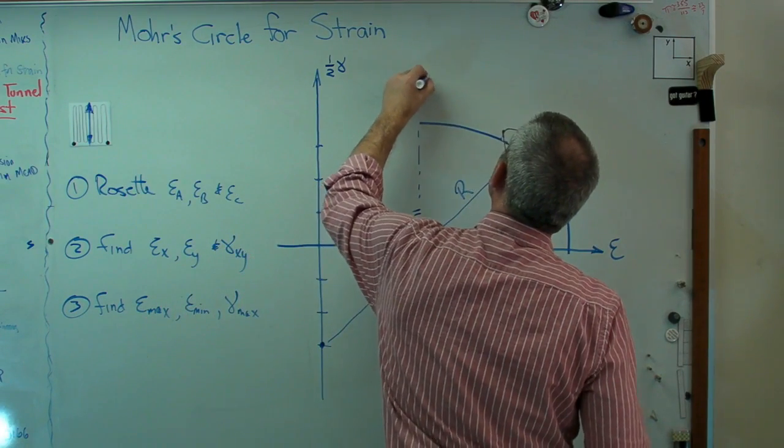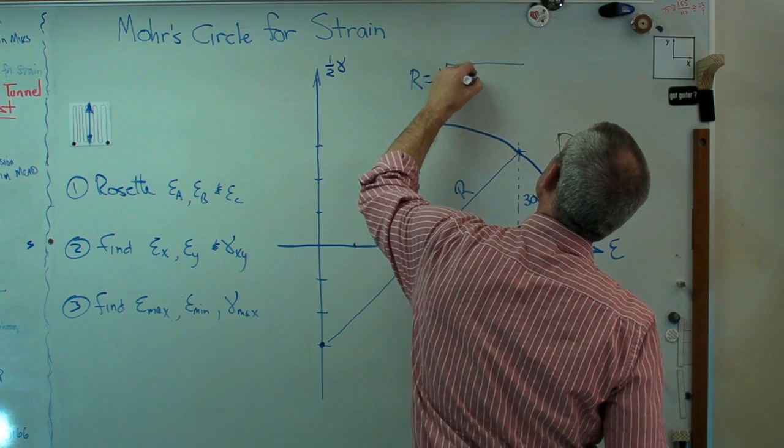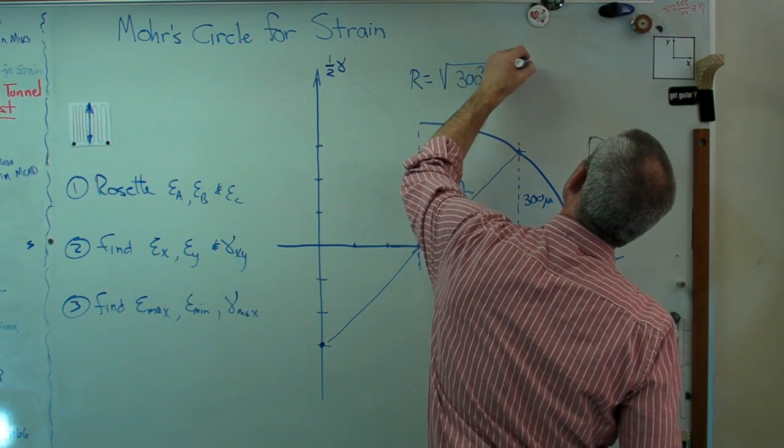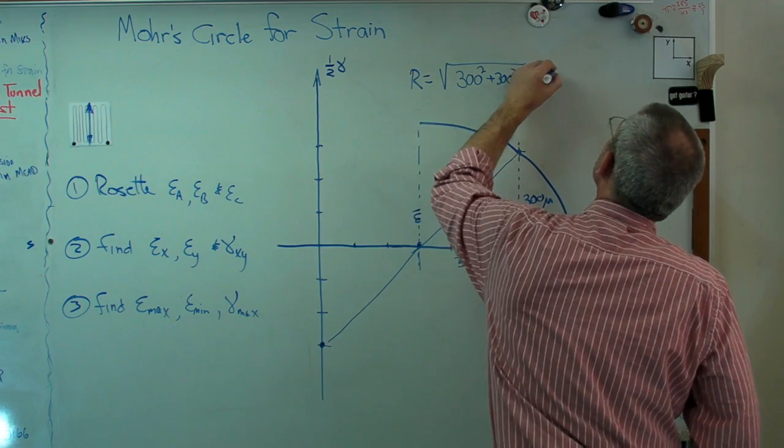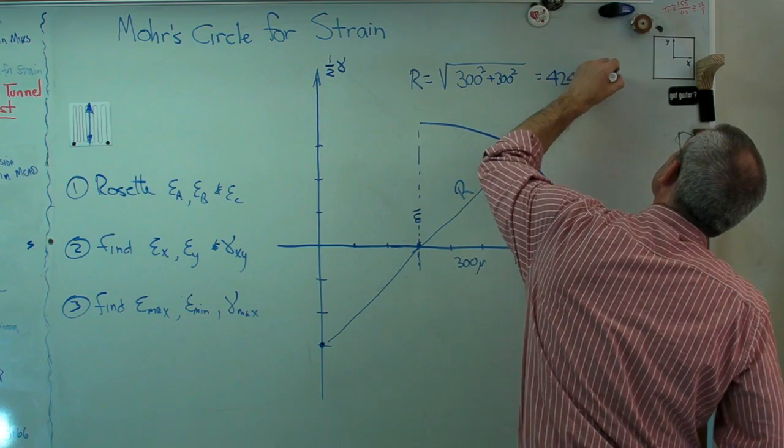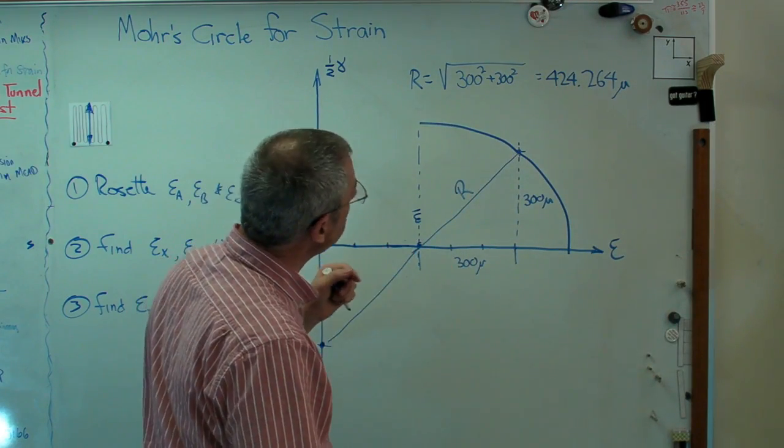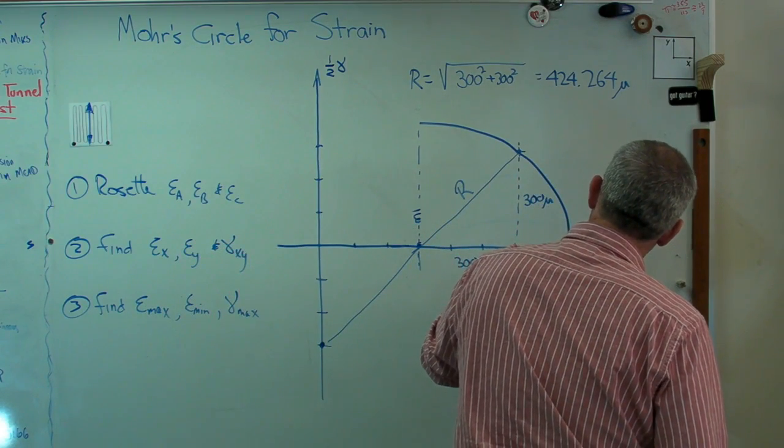Now R is, let's see, square root, let's work this in microstrain, plus 300 squared. And if you work the numbers out, you get 424.264 microstrain. Now let's see what that means.